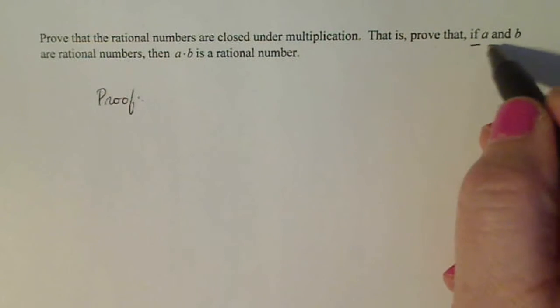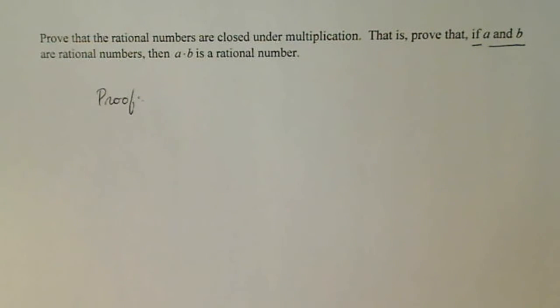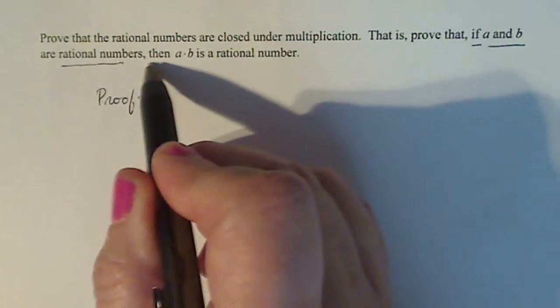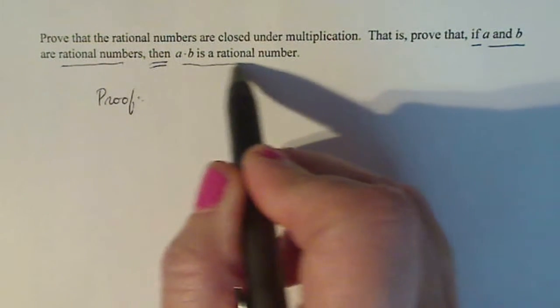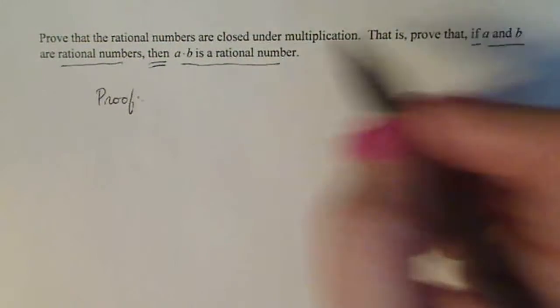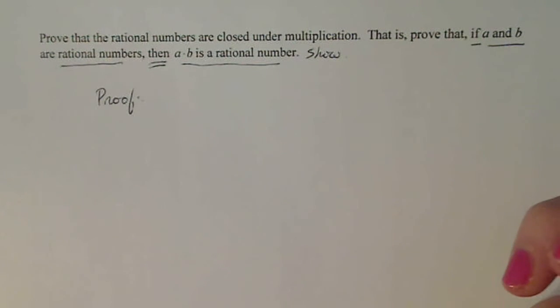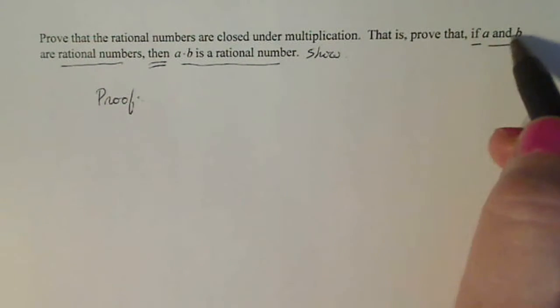I'm going to suppose that A and B are rational numbers, then I have to show that A times B is a rational number. Don't assume that. This is what you're trying to show. This should be the very last thing that you say, but you do start out with the premise.